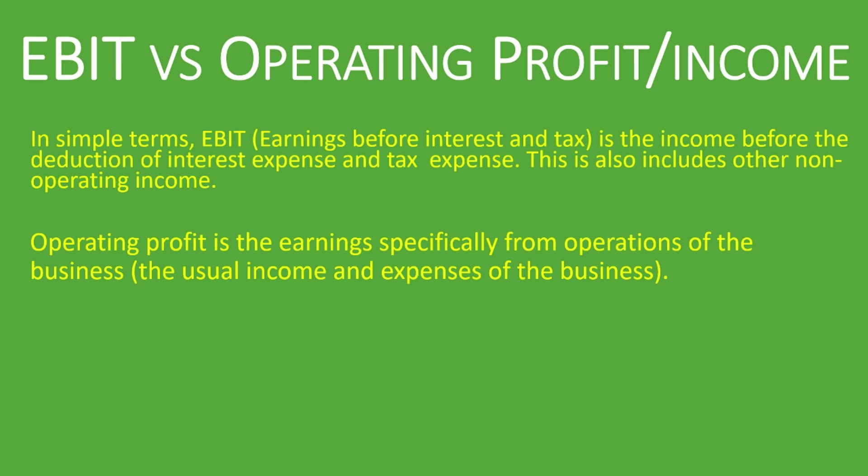We are talking about the earnings from operations of the business — the usual income and expenses. The income and expenses that fall as part of the operating profit only pertain to operations. But when we're talking about earnings before interest and tax, it may include other income which does not pertain to your usual operations, as you'll see with the help of some examples.